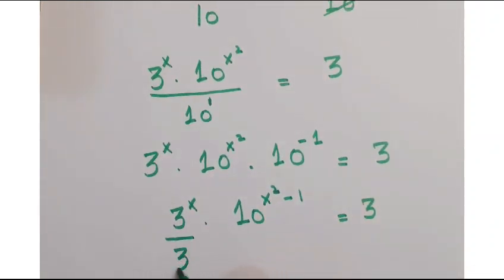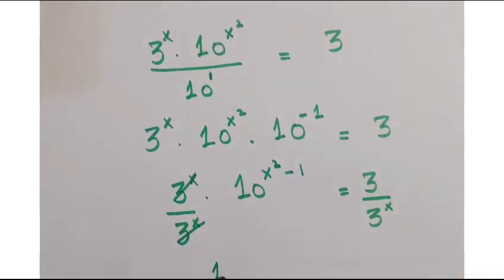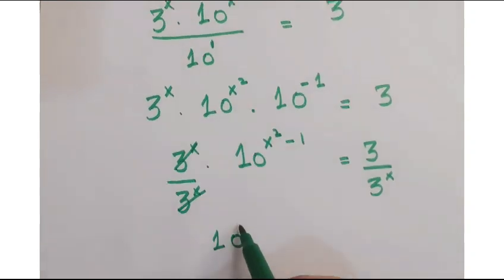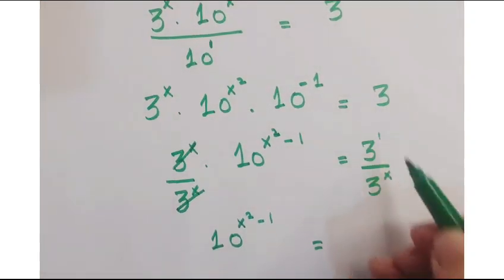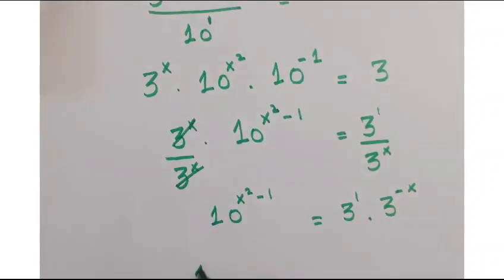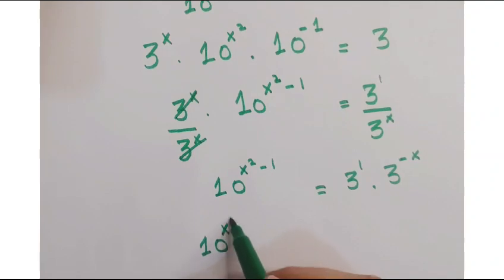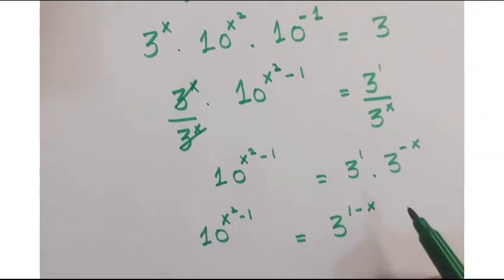Now, divide by 3^x on both sides. This term gets cancelled, so you get 10 to the power x squared minus 1 is equals to 3 to the power 1 into 3 to the power minus x. Further, you get 10 to the power x squared minus 1 is equal to 3 to the power 1 minus x.